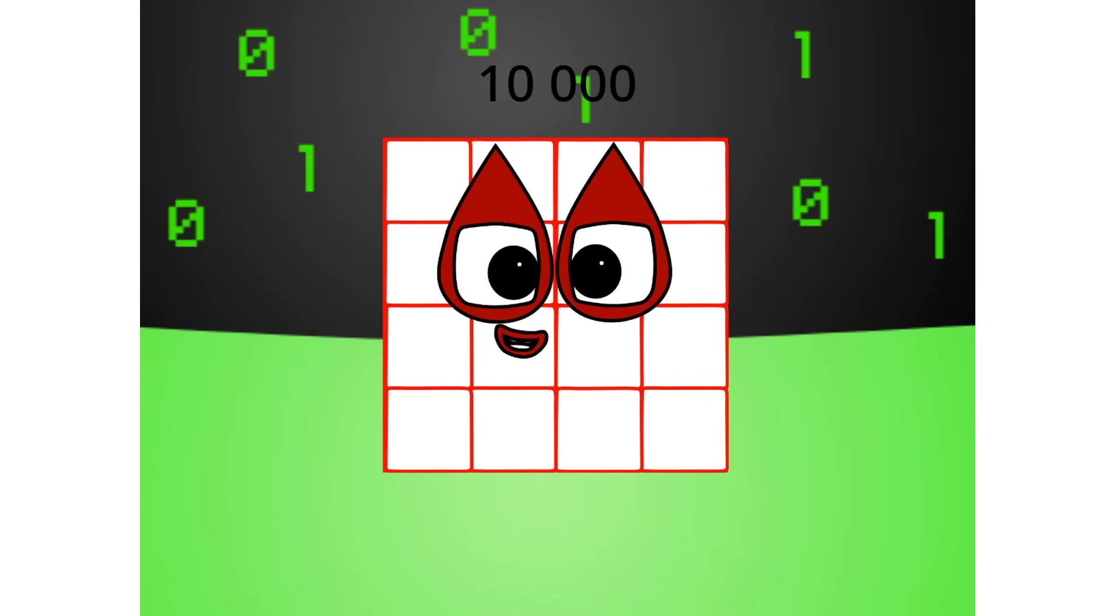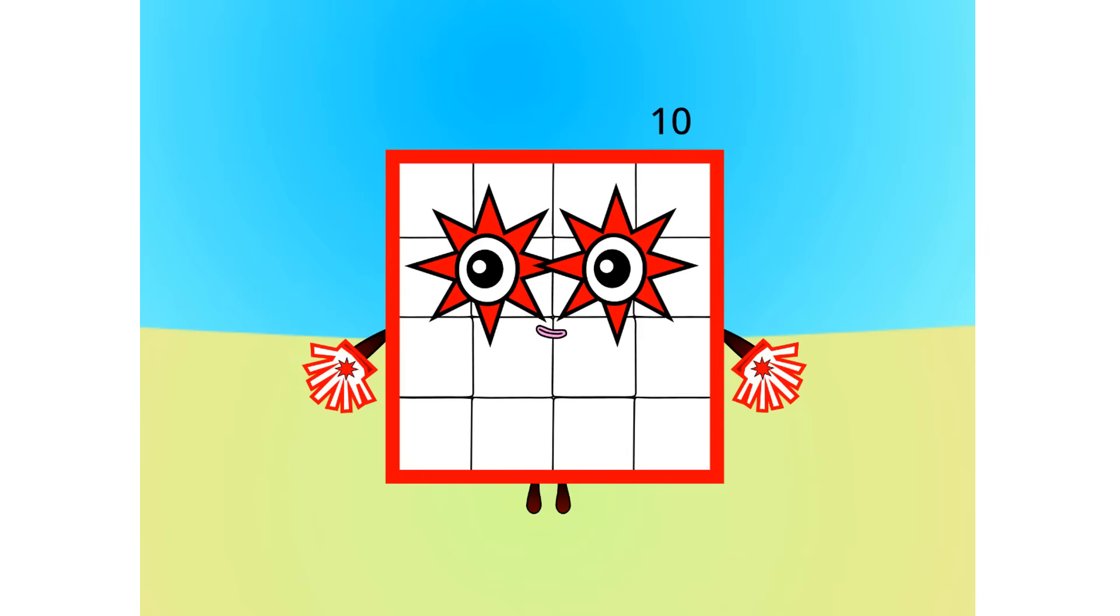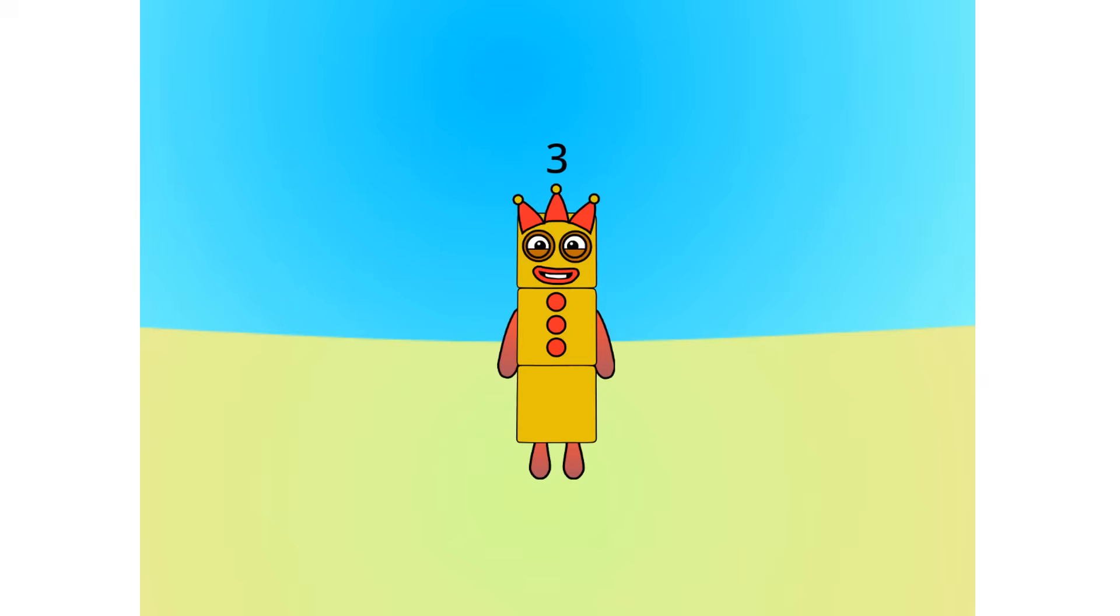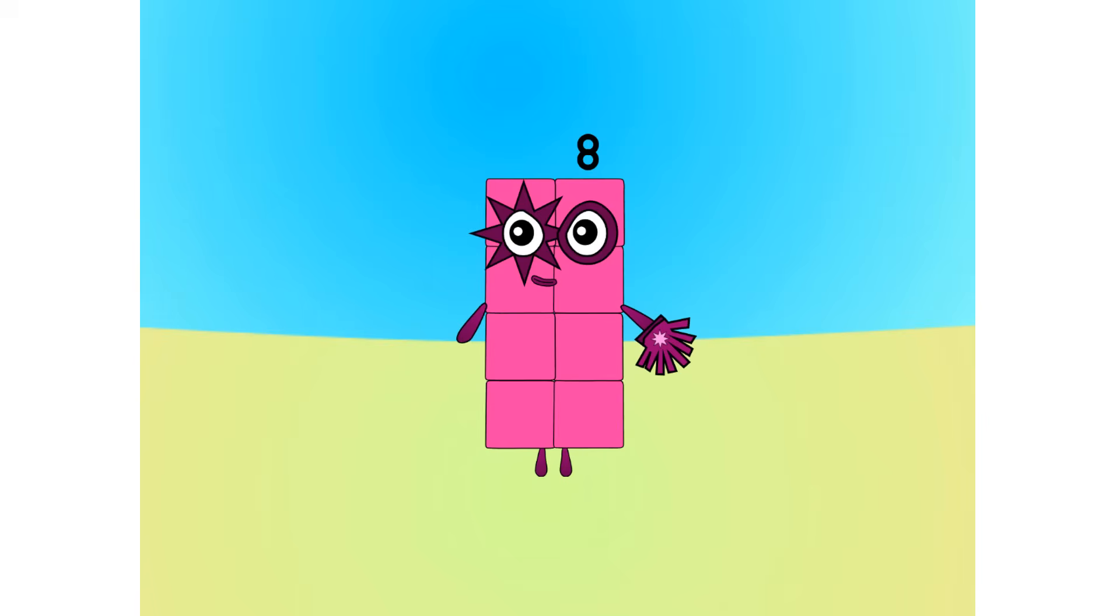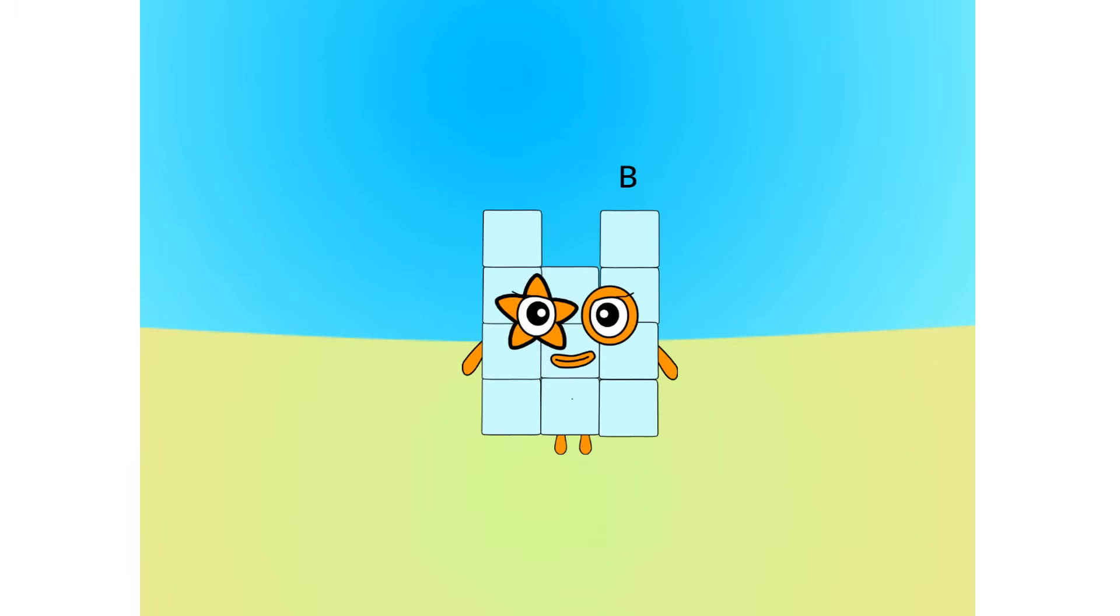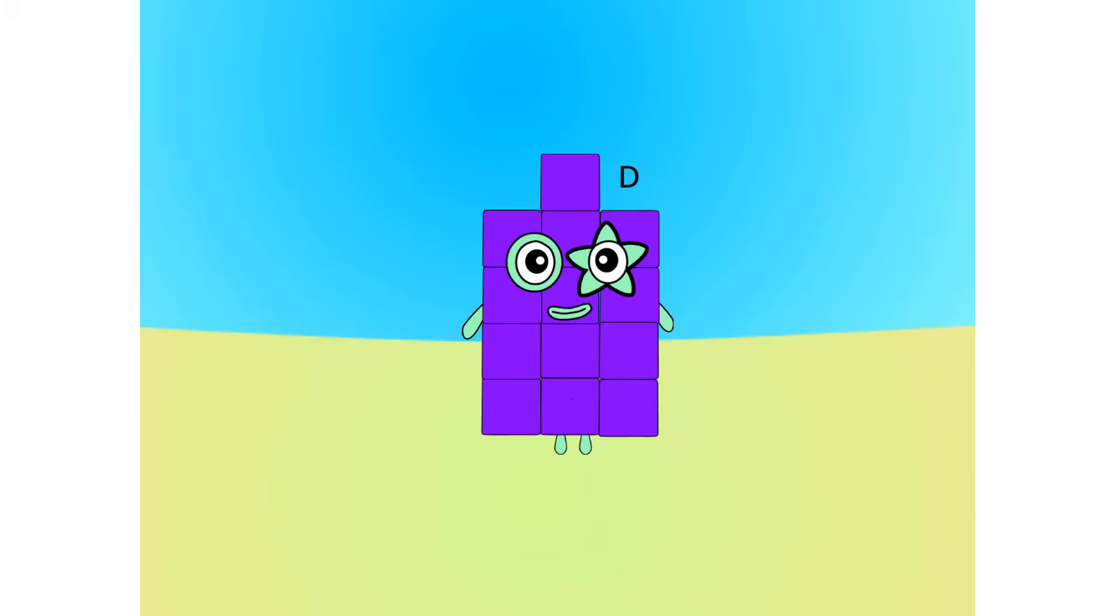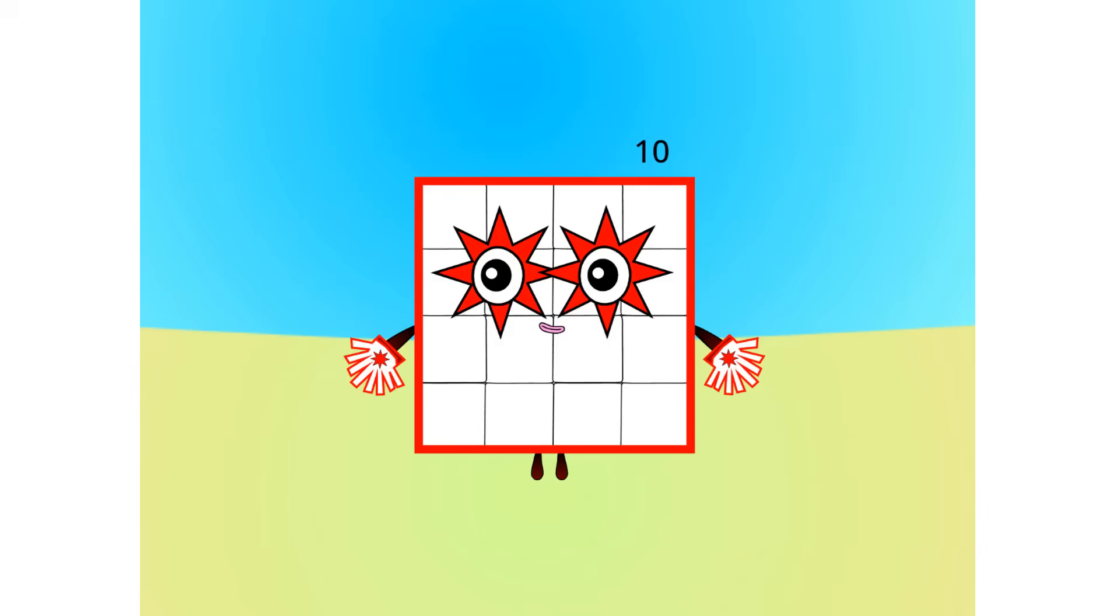Let's move on to the next base. This is base 16, also known as hexadecimal or hex. If this is base 16, there needs to be 16 digits. 1, 2, 3, 4, 5, 6, 7, 8, 9, A, B, C, D, E, F, 1, 0.